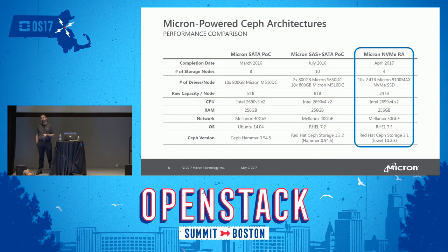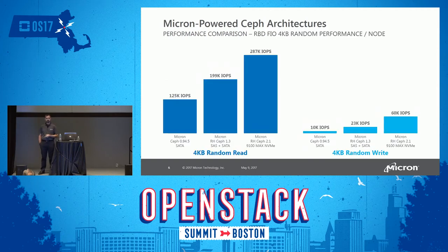The latest is a full reference architecture that was published yesterday morning and is available online right now. It uses 10 Micron 9100 Max NVMe solid-state drives — 24 terabytes per 1U node — with the Intel 2699 V4 (the highest-bin dual processor), 256 GB of RAM, 50 gig networking, and Red Hat Ceph Storage 2.1.